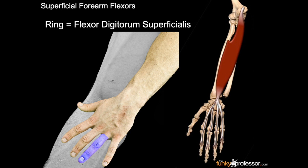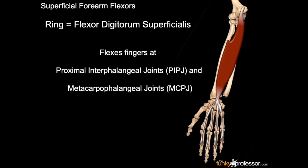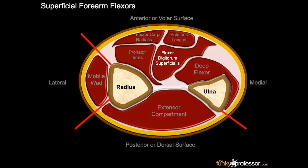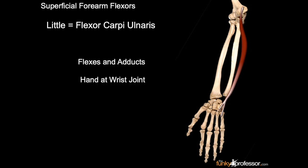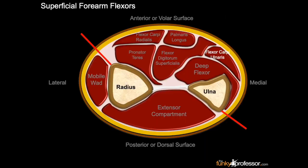The ring finger represents flexor digitorum superficialis, which flexes the fingers at the proximal interphalangeal joint and the metacarpophalangeal joint. It is deeper, as seen here in cross section. The little finger represents the flexor carpi ulnaris, which flexes and adducts the hand at the wrist joint. It can be seen in cross section lying most medially.